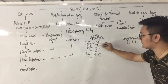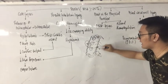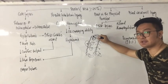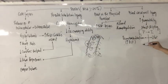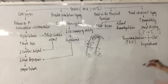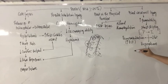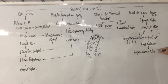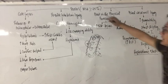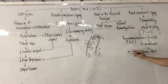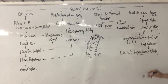As fluid shifts from plasma to interstitial, blood volume falls, causing hypovolemia. If hypovolemia is not corrected, it leads to hypovolemic shock. Because the cause is a burn injury, we call this burn shock or hypovolemic shock.